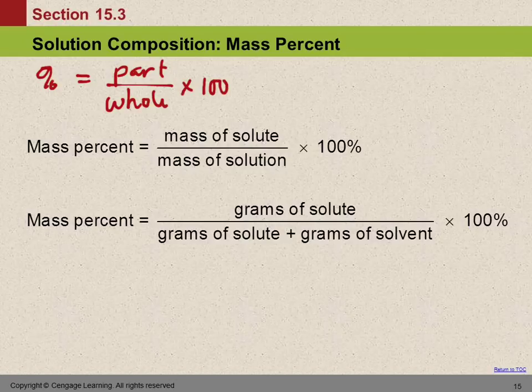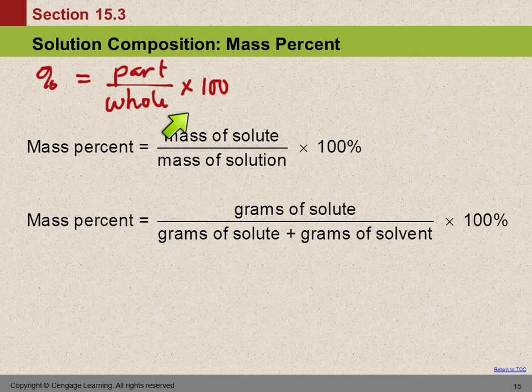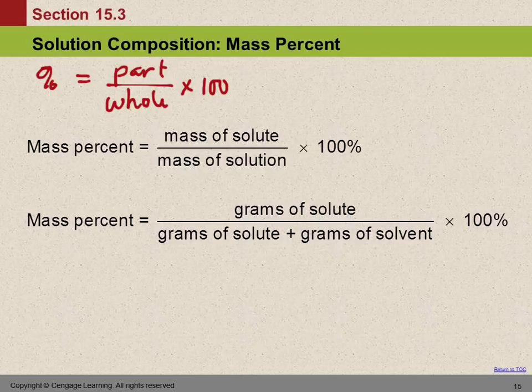In a mass percent, the part is the mass of the solute—that's the smaller amount one. And the whole thing is the mass of the solution. Multiply that by 100% to get a percentage. This is not going to have units of grams or liters or anything like that, it's just going to have a unit of percent.